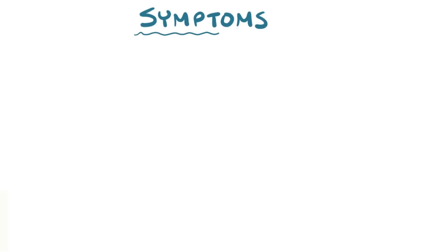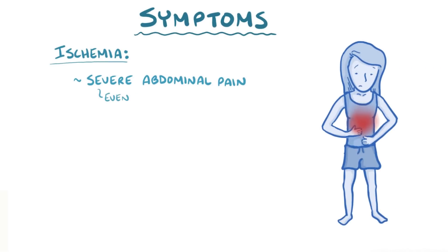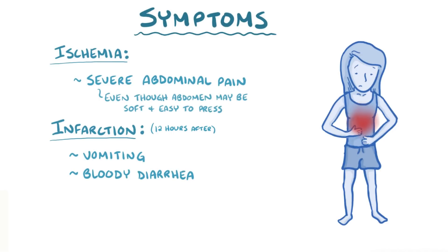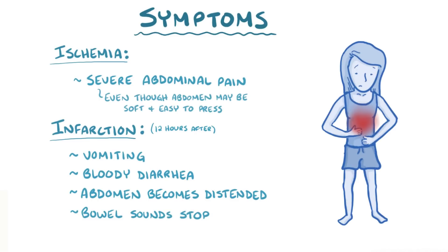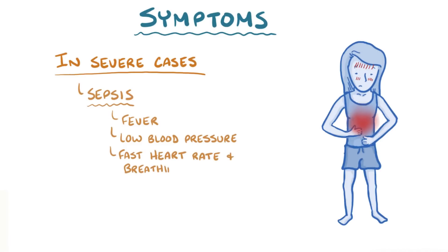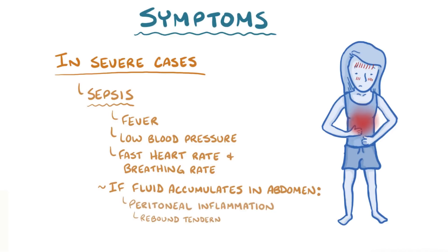A classic symptom of small bowel ischemia is severe abdominal pain, even though the abdomen itself might be soft and easy to press into. Small bowel infarction usually happens about 12 hours later and commonly causes vomiting and sometimes even bloody diarrhea. Over time, the abdomen can get distended and bowel sounds can go away as the bowel stops moving. In severe cases, when there's sepsis, a person can develop a fever, low blood pressure, and a fast heart rate and breathing rate to help compensate. If fluid accumulates in the abdomen, it can cause signs of peritoneal inflammation, like rebound tenderness and guarding.